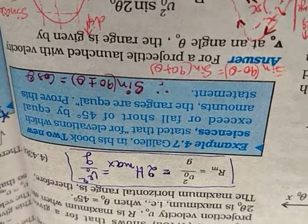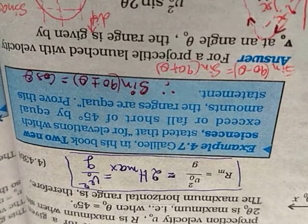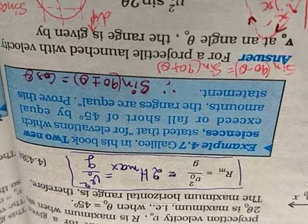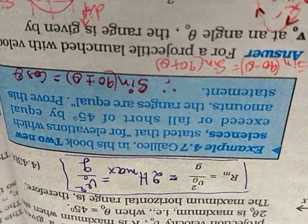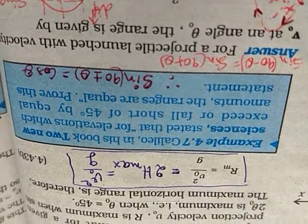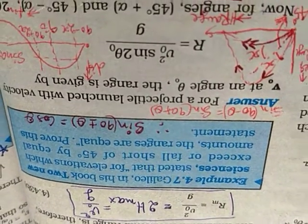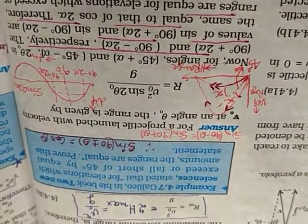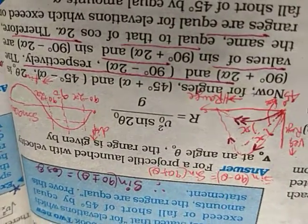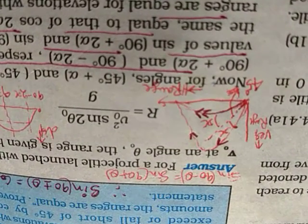This means the range of the projectile will be the same if the angle of projection is by the same amount greater than 45 degrees and smaller than 45 degrees. This is because we can see using the relation for the horizontal range of a projectile. Say for example,